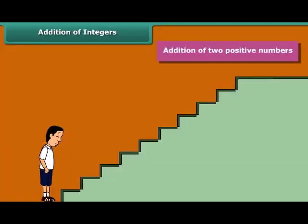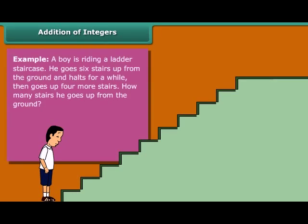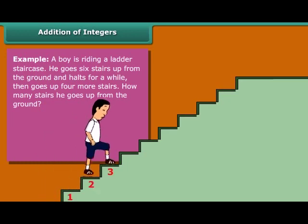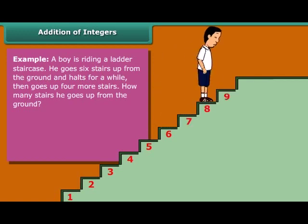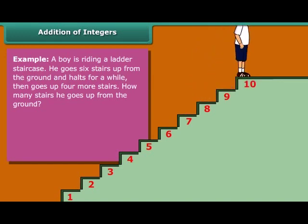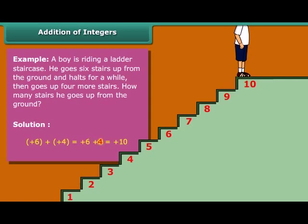Addition of two positive numbers. Example: A boy is riding a ladder staircase. He goes six stairs up from the ground and holds for a while, then goes up four more stairs. How many stairs does he go up from the ground? Plus 6 plus plus 4 equals plus 10.